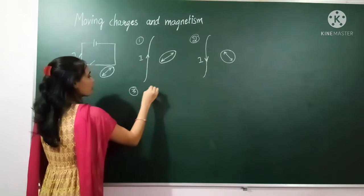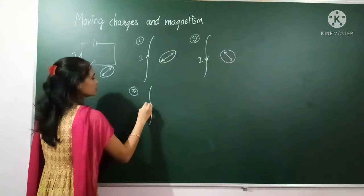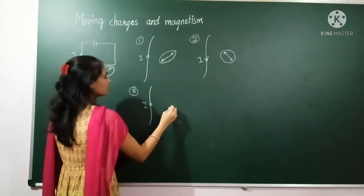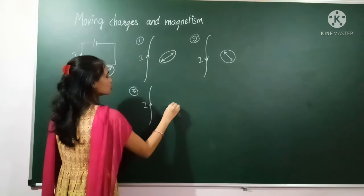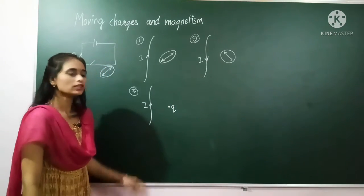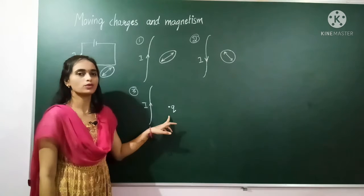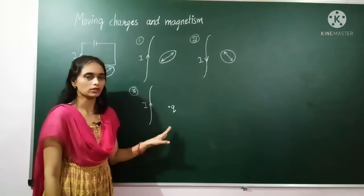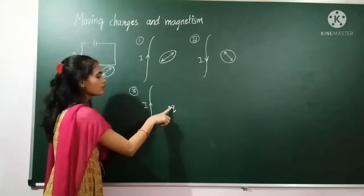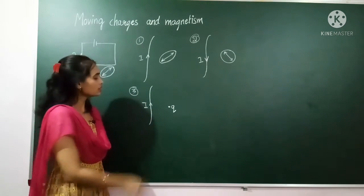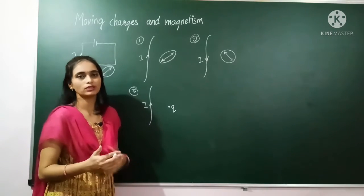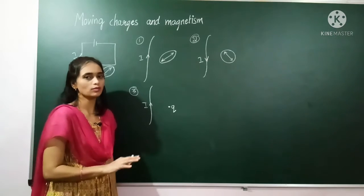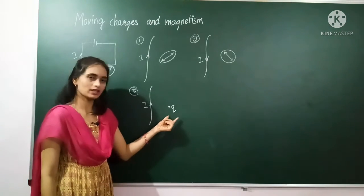For the third observation, we took the wire with I amount of current flowing, but instead of a magnetic needle, we placed a charge Q — and this charge is at rest. What we observed is that this charge is not showing any deflection or any motion. Meaning this magnetic field is not applying any force on a rest charge. This is our third observation.